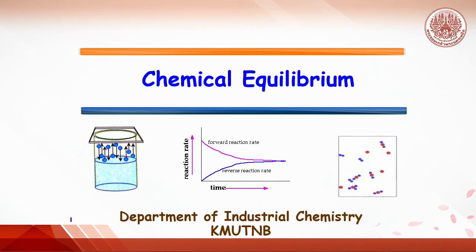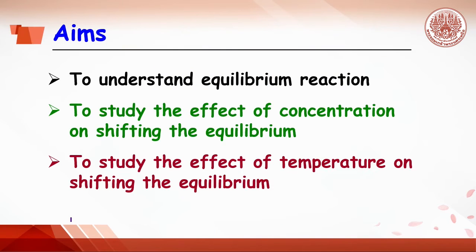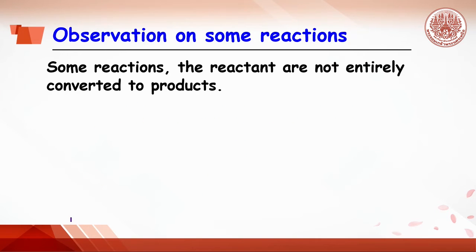Chemical equilibrium experiment is aimed to understand behavior of equilibrium reaction, to study the effect of concentration on shifting the equilibrium position, and to study the effect of temperature on shifting the equilibrium position. The reason for this type of reaction is from the observation that some reactants can be reversible.